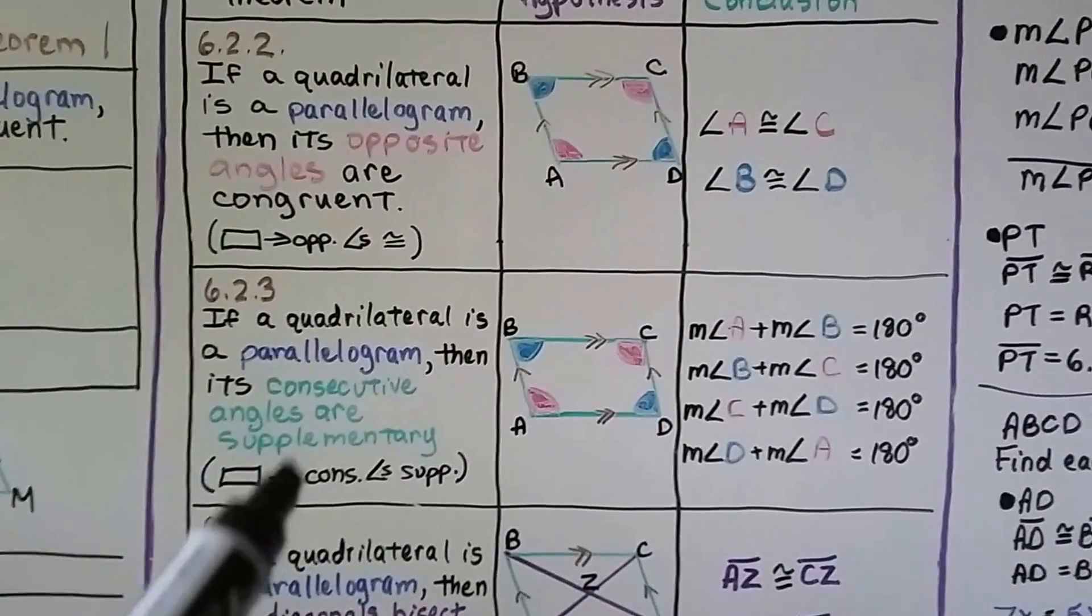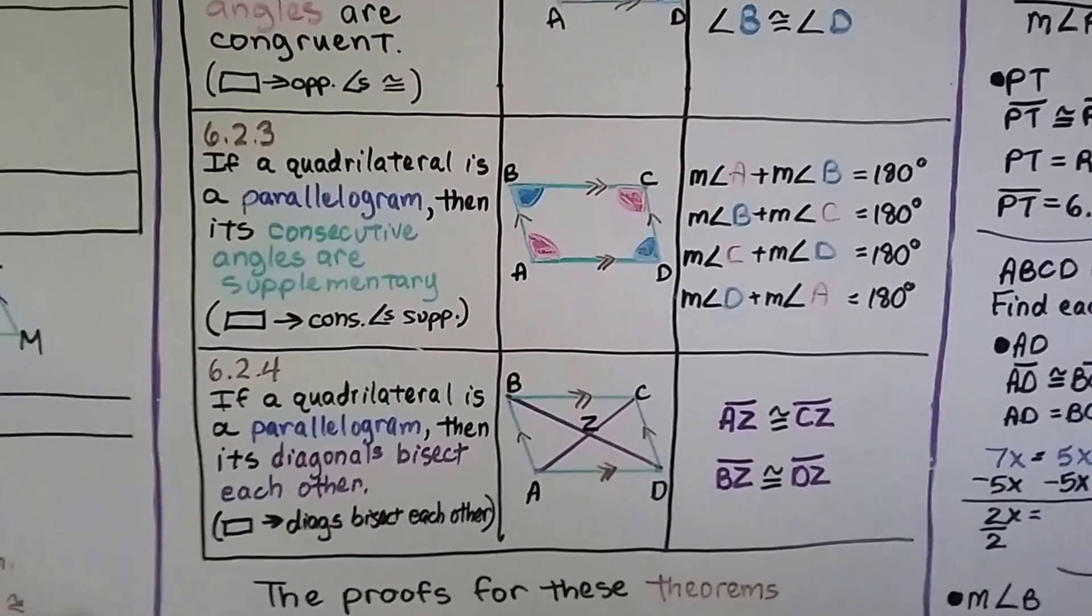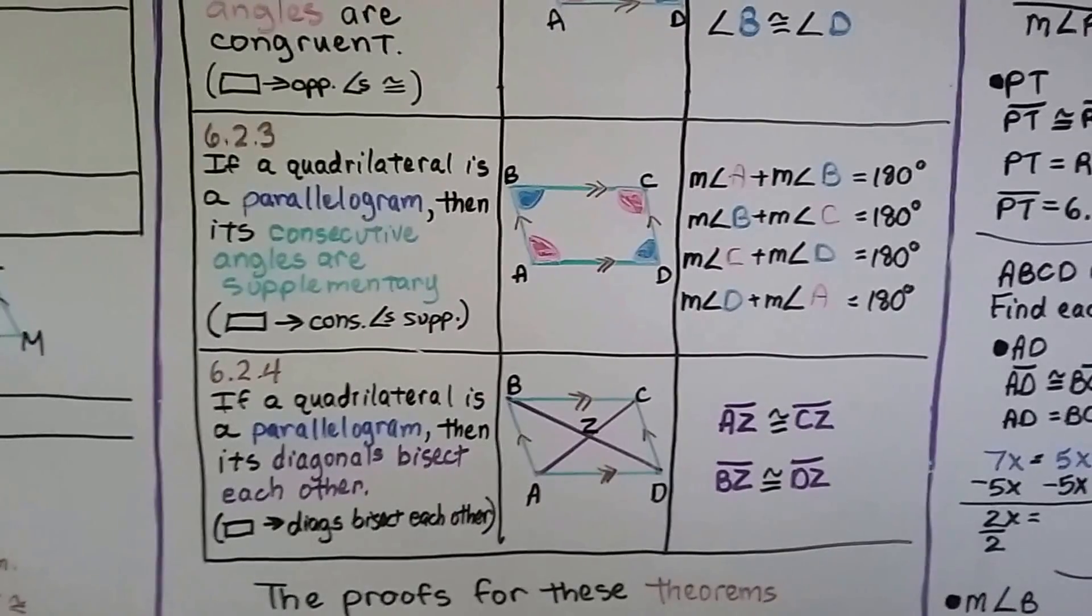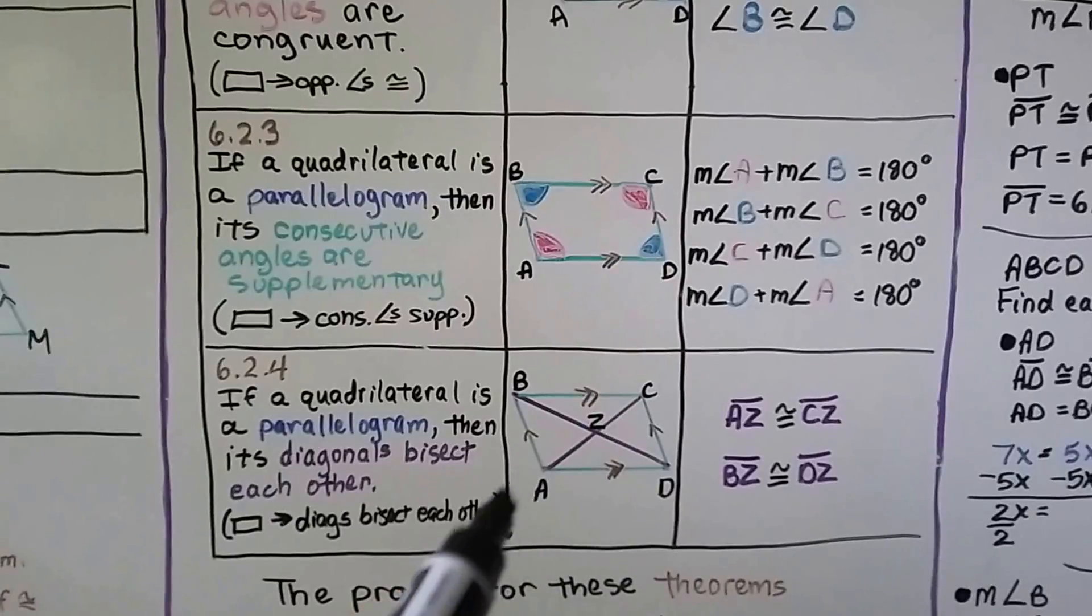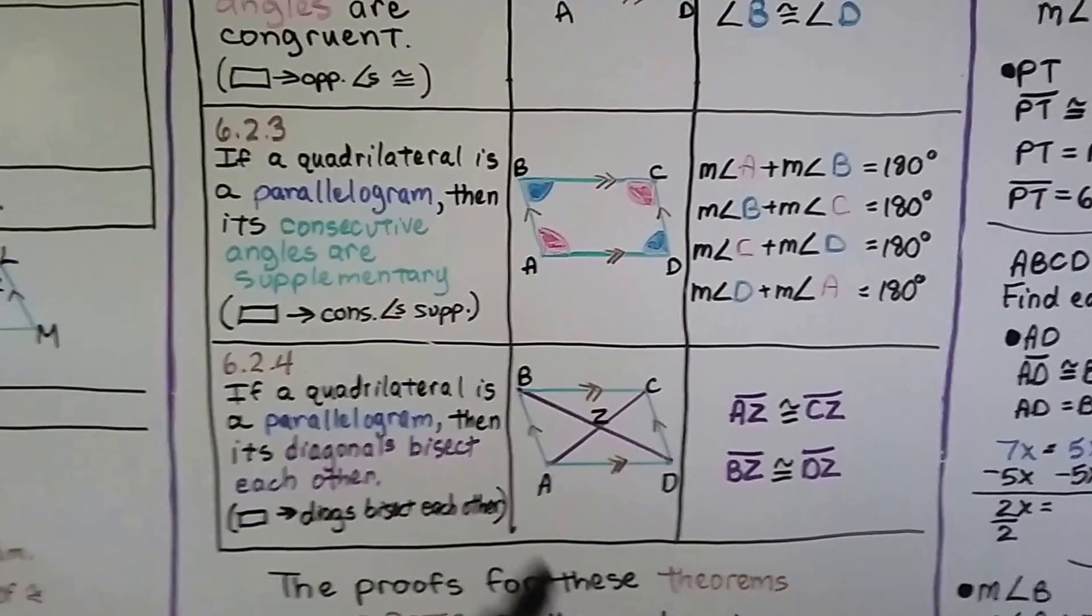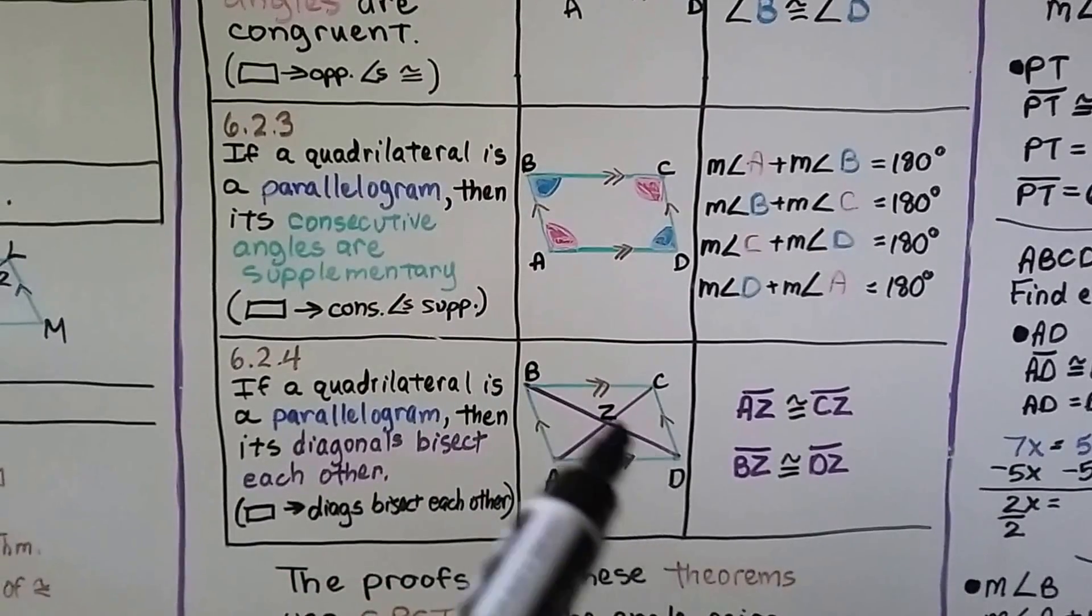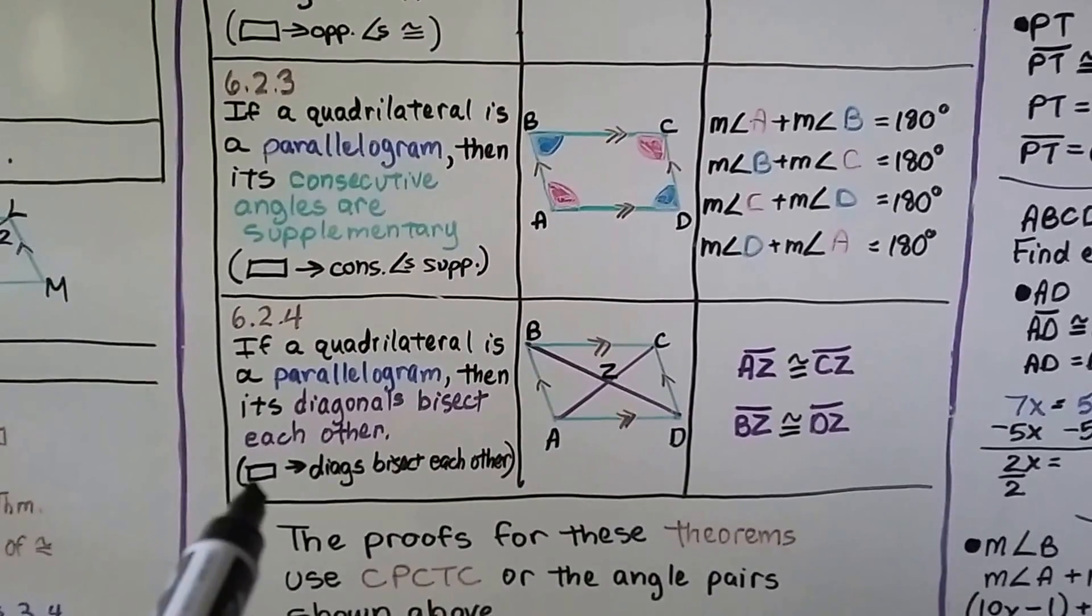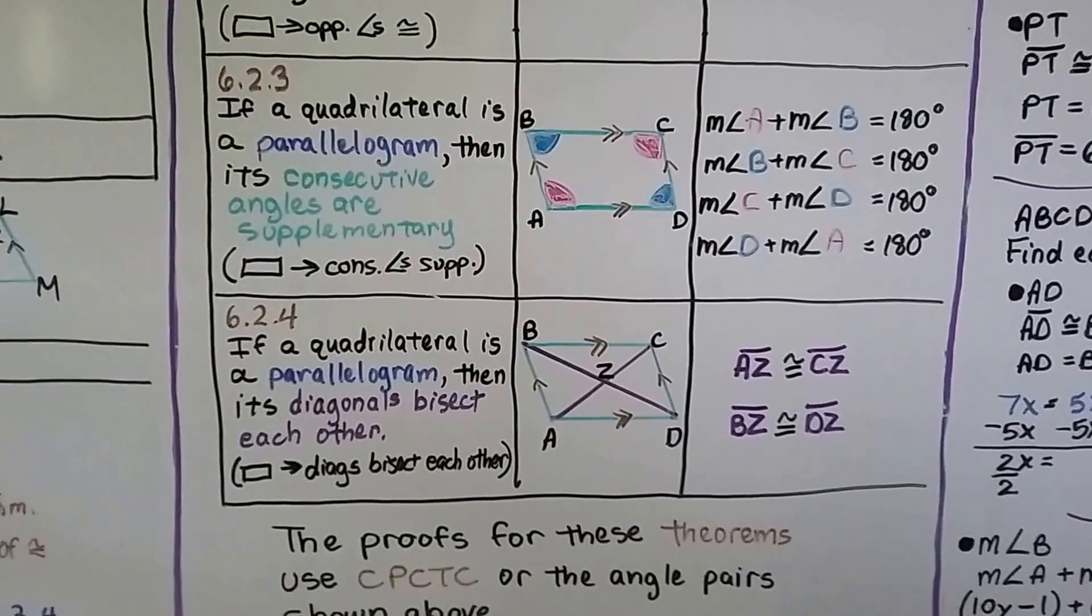So that's if it's a parallelogram then. Here's our fourth one. If a quadrilateral is a parallelogram, then its diagonals bisect each other. So now these diagonals are bisecting each other at Z. So AZ is congruent to CZ, and BZ is congruent to DZ. And we can write it in a proof as diagonals bisect each other.